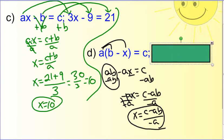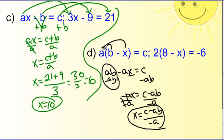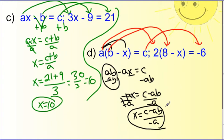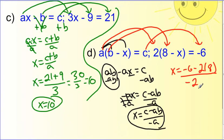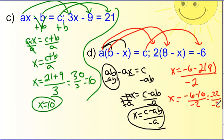Now we plug in the numbers: a is 2, b is 8, c is negative 6. So x equals c minus a times b, divided by negative a. Order of operations — multiply first: 2 times 8 is 16. Then negative 6 minus 16 is negative 22. And negative 22 divided by negative 2 is positive 11.